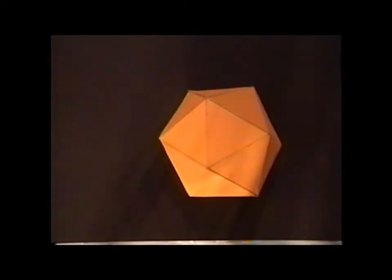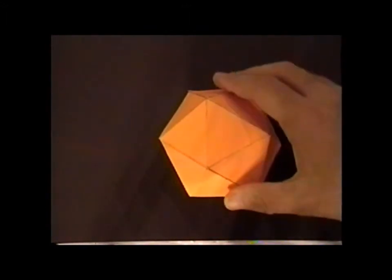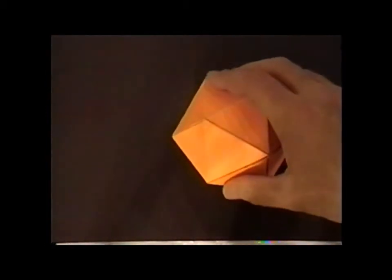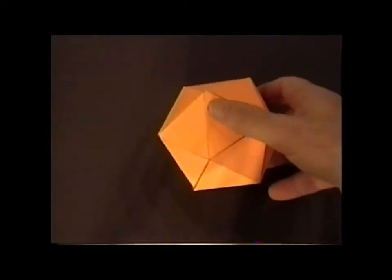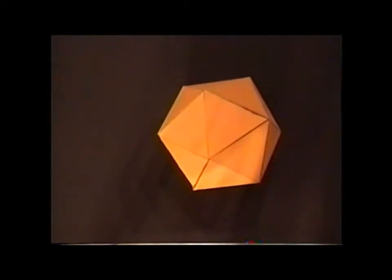Icos means 20, and hedron means face. So the icosahedron has 20 triangular faces. In the regular icosahedron, each of the 20 faces is an equilateral triangle.